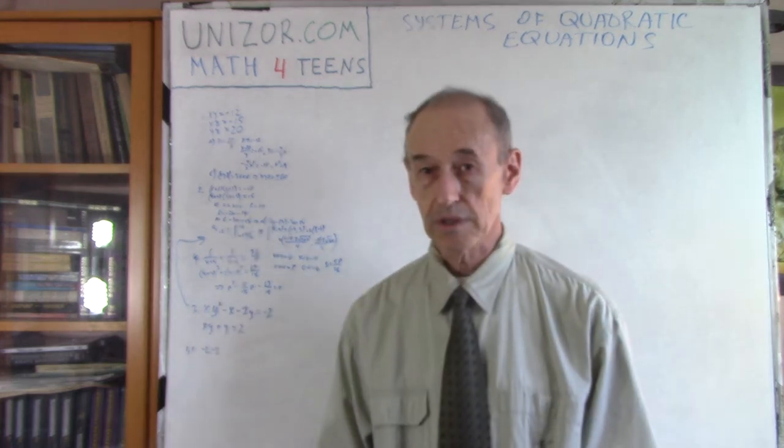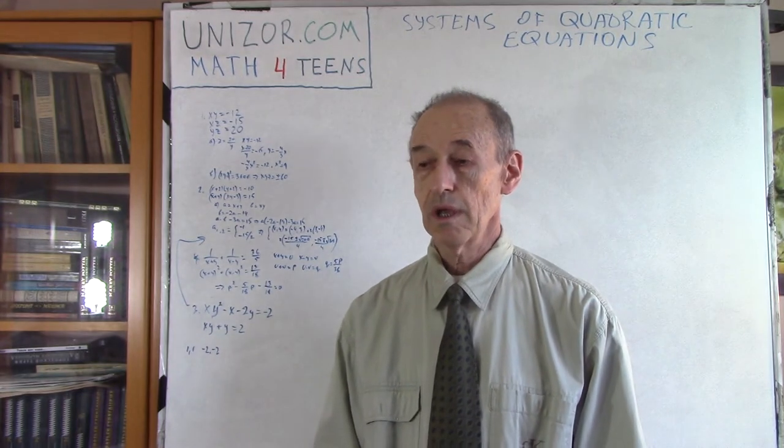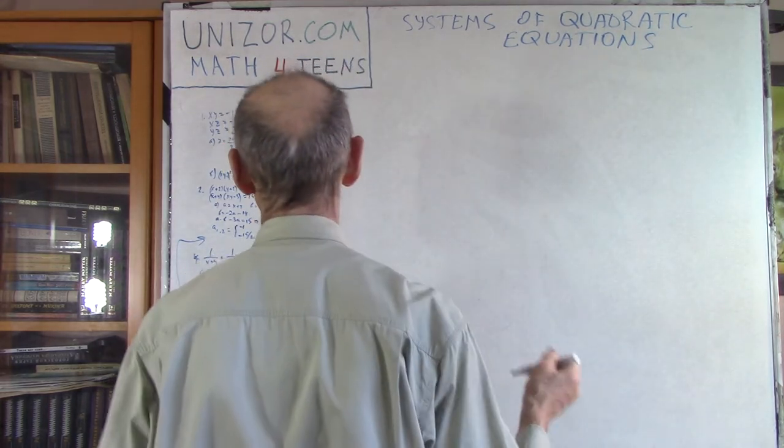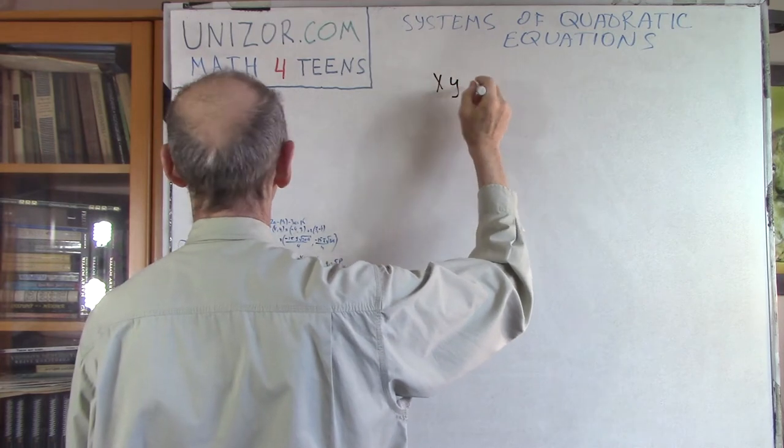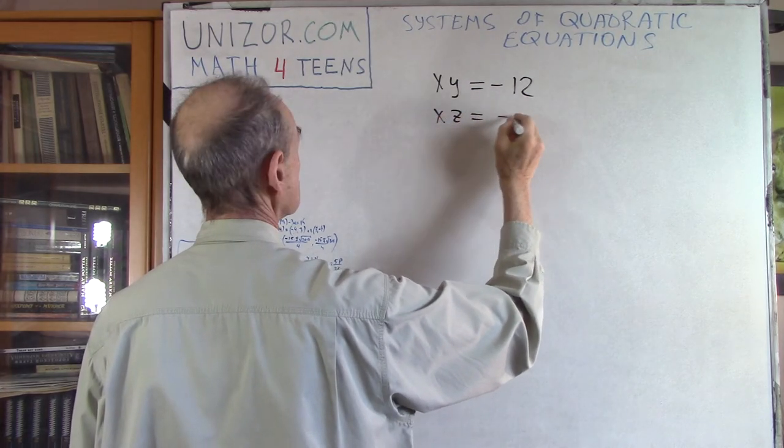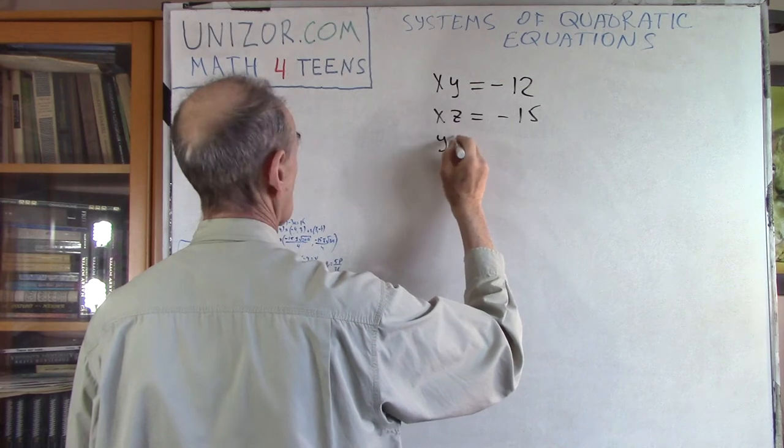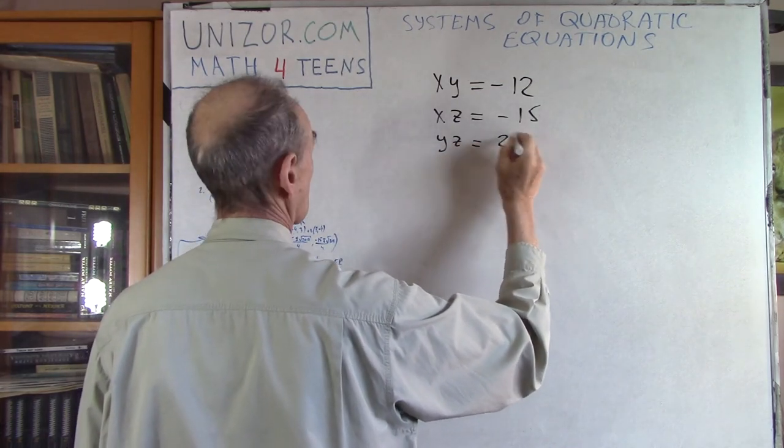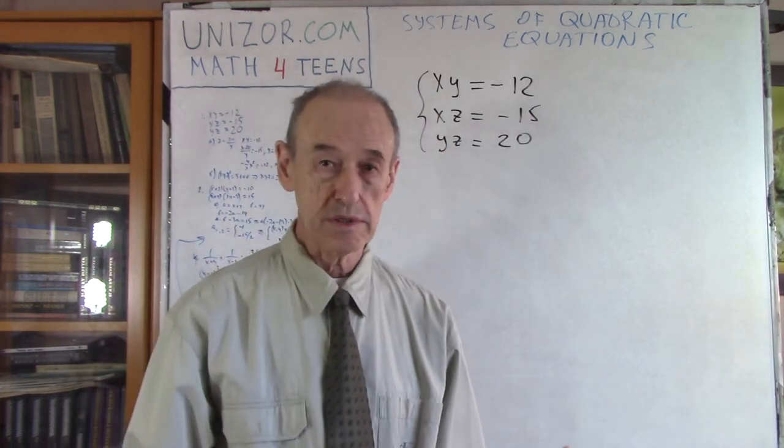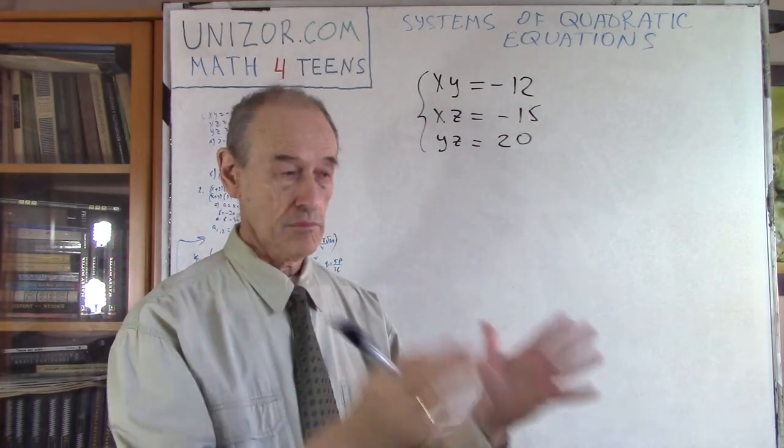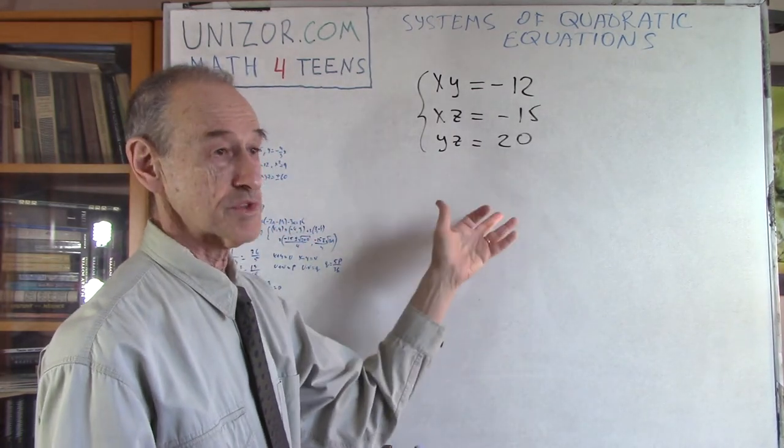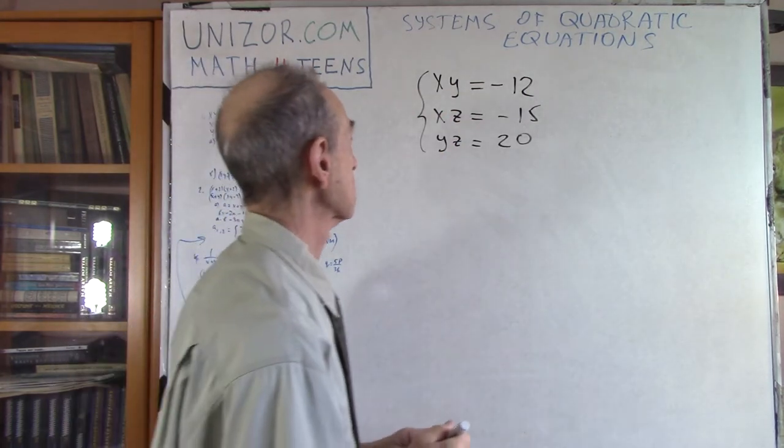Alright, so let's start. We are talking about systems of quadratic equations. The first problem is I have a system of three equations with three unknowns. Let's think about how to approach solving this system. First, let's try to do it straight, which means we can resolve, let's say, the third equation for Z and substitute into the previous one.